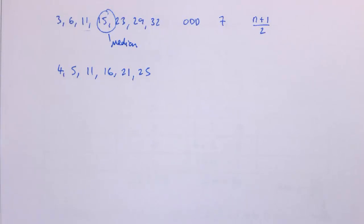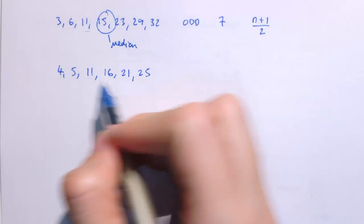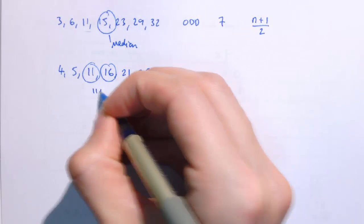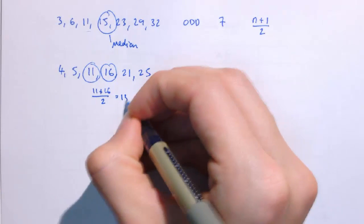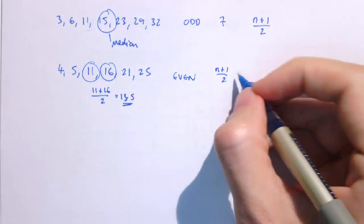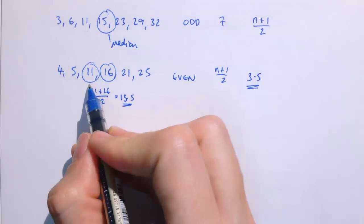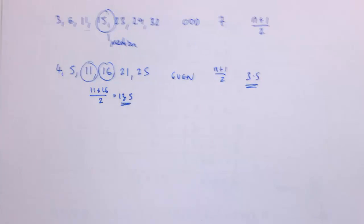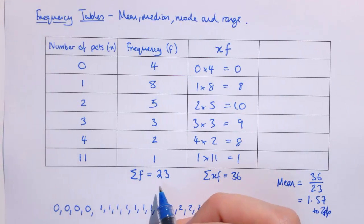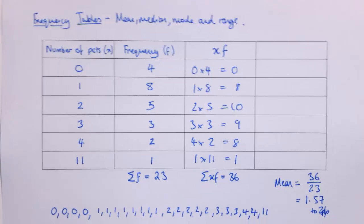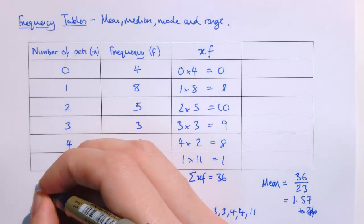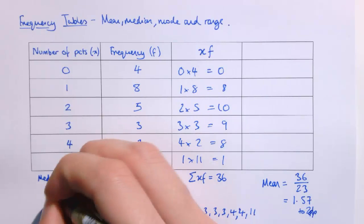With an even number of values there's no unique middle value, so we average the two middle ones. For example, doing 11 plus 16 over 2 gives 13.5 as the median. You can still use n plus 1 over 2, which gives 3.5, meaning we go between the third and fourth values. Looking back at our data, we had 23 pieces of data — a nice odd number. So n plus 1 over 2 gives 24 over 2, meaning the median will be the 12th value.